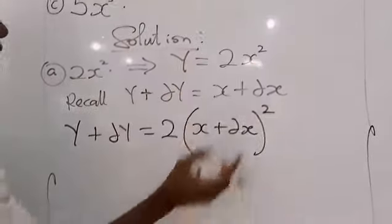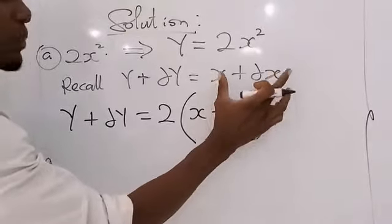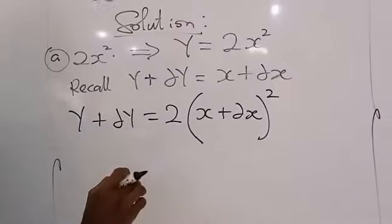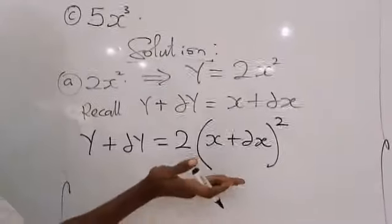Now, the difference between this and this is just that. In place of X, I have replaced it with my X plus change in X. And since it is squared, I will square this as well.